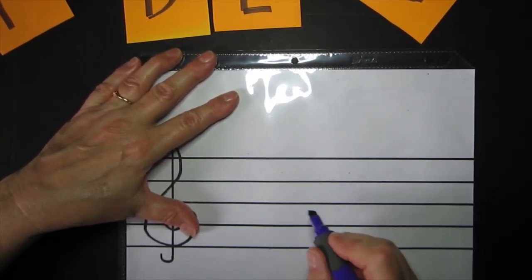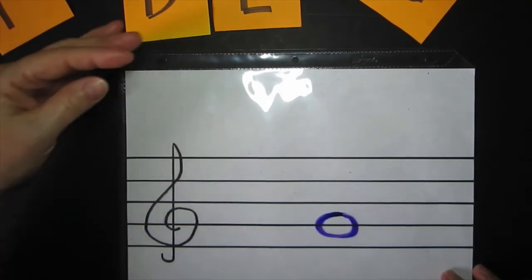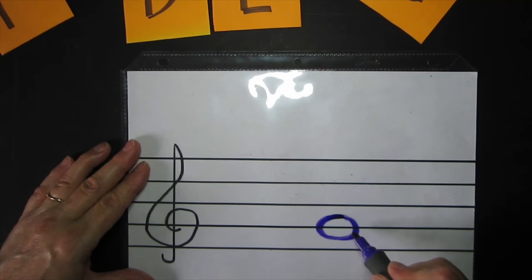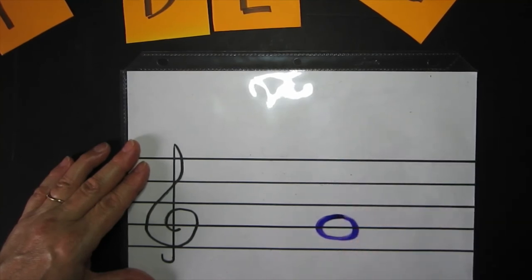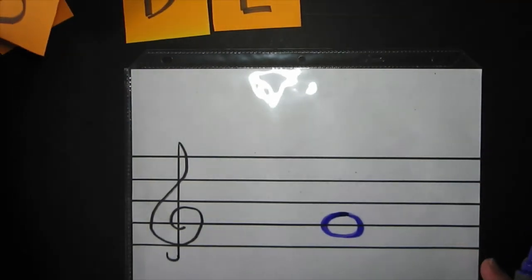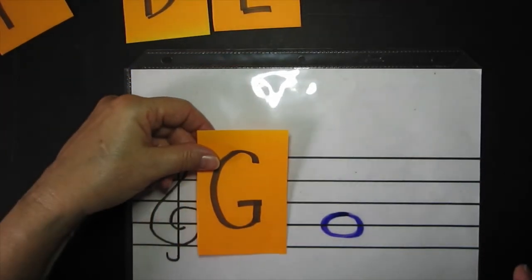Another one. This is a line. The line is running straight through the middle of the note. Can you tell me its pitch name? Think of our saying. Every good bunny deserves fun. Select your pitch name card. And show it. It should be a G.